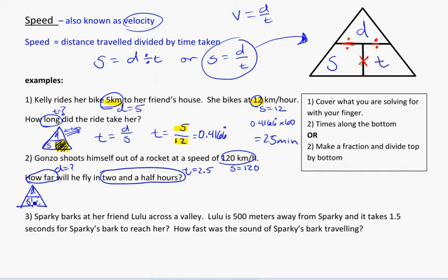So if you drop your little triangle again, think about covering up the one that you're looking for. And here I'm looking for distance, so I'm going to cover it up. And I'm left with S and T. And I already told you that if you're going along the bottom, you're going to times. We always have that times sign between the two. So that's S times T. So here, distance is going to be equal to S times T. So the distance he travels will be equal to the speed, 120, times the time of 2.5, and that's going to be equal to 300 km. So in 2 and a half hours, traveling at a speed of 120 km per hour, he's going to travel 300 km.